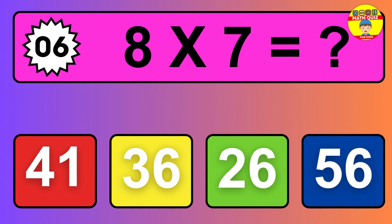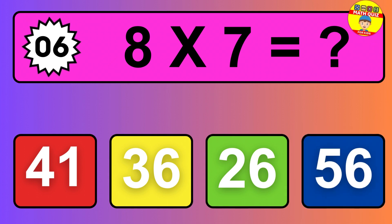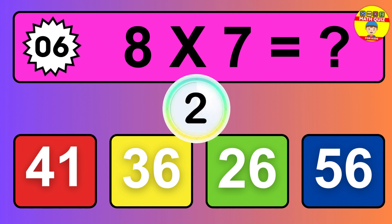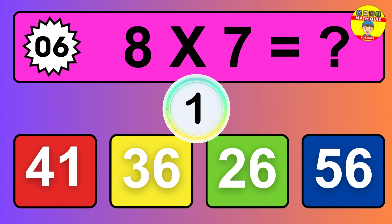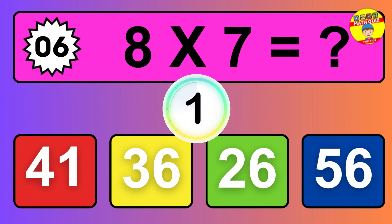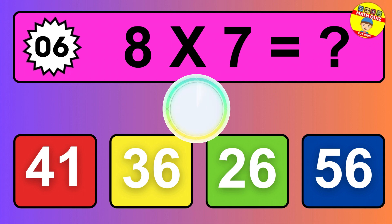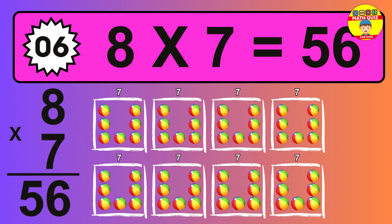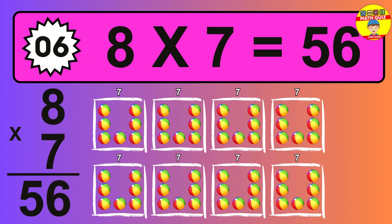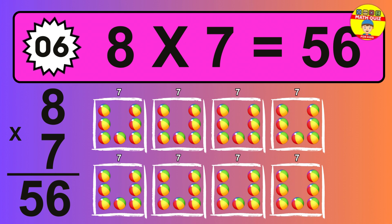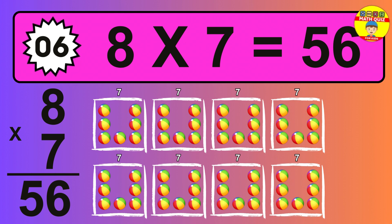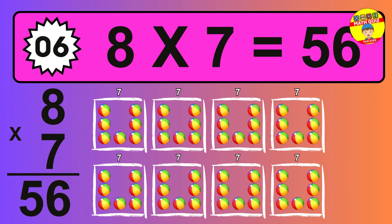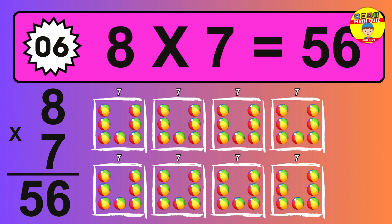Question six. Eight times seven equals what? So the answer is eight times seven is 56. To calculate, we have eight groups with seven balls each one. So how many balls do we have? 56 balls.